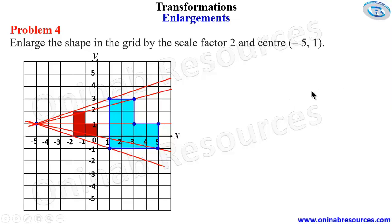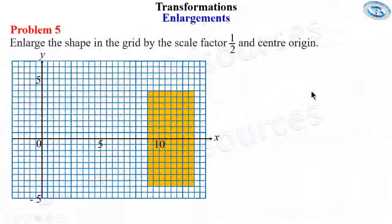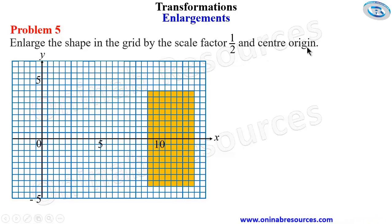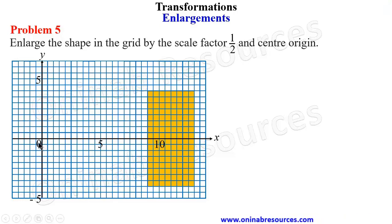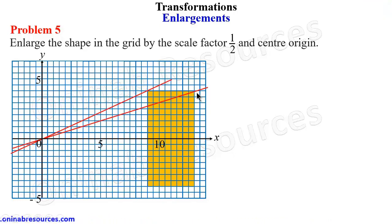Problem five: enlarge the shape in the grid by scale factor one over two and center the origin. The center is the origin. We join it to all the vertices of the object — origin to this point, origin to this point, origin to this point, and origin to this point.